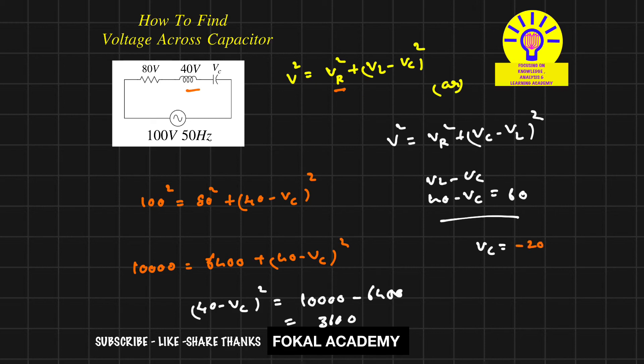Since voltage drop is always positive, this is not the correct answer. So we take VC minus VL equals 60. Since VL is given as 40, VC minus 40 equals 60.